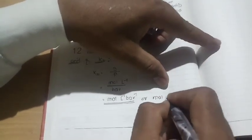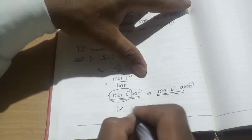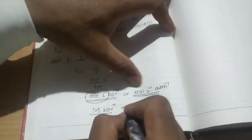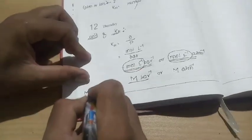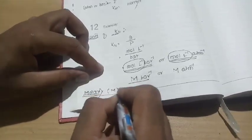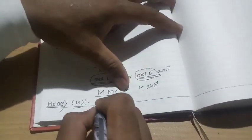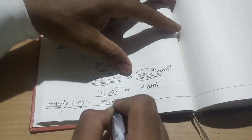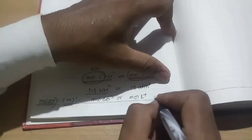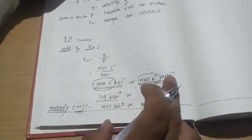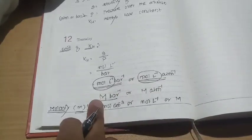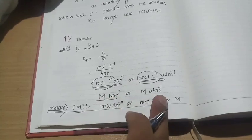Alternatively, if pressure is in atmosphere, the unit is mol per liter per atmosphere — that is also correct. We can also write the unit using molarity notation: capital M per bar, or capital M per atmosphere. Recall that molarity M is defined as the number of moles of solute present in one dm³ of solution, expressed in mol per dm³ or mol per liter, or simply capital M. So the unit of KH is mol per liter per bar, or molar per bar, or molar per atmosphere.